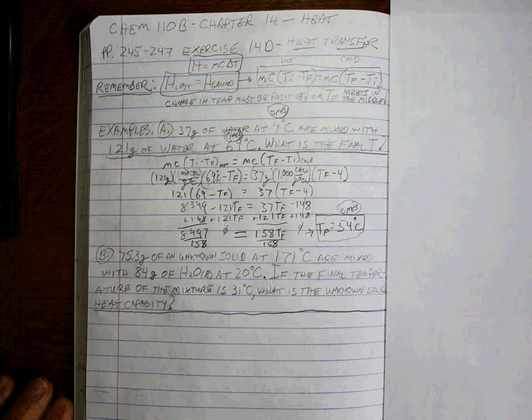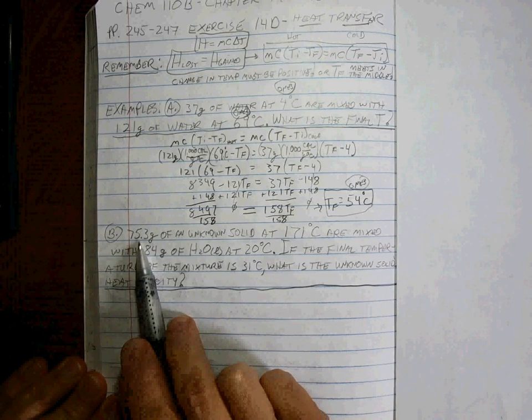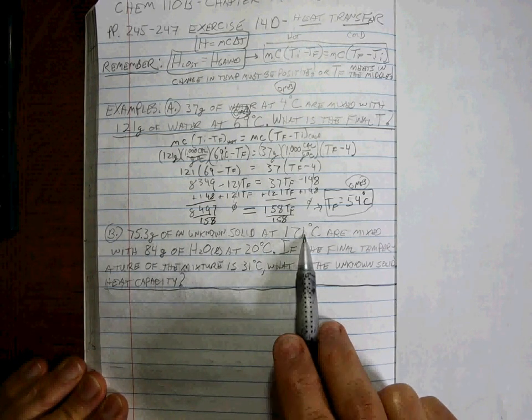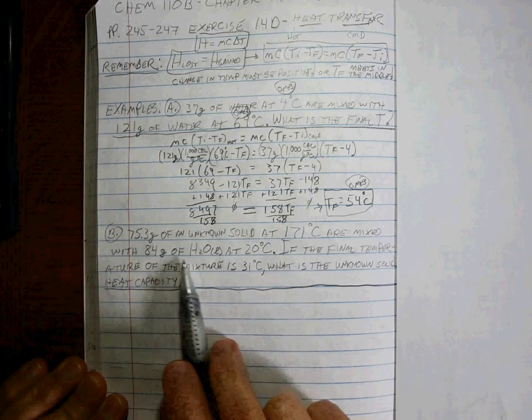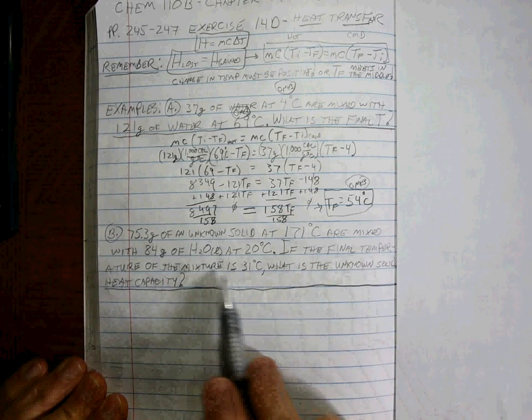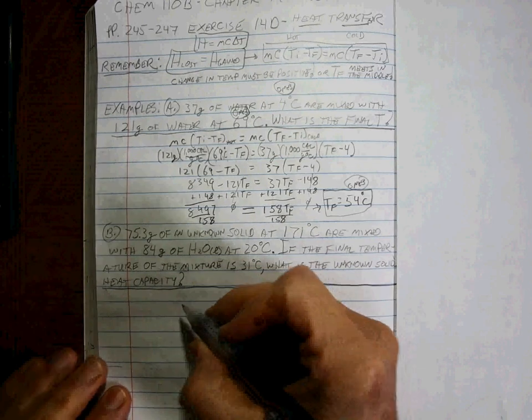Alright, so that's that problem. Let's do the next. 75.3 grams of an unknown solid at this temperature are mixed with 84 grams of water liquid at 20. Final temperature is given. What's the unknown solid?